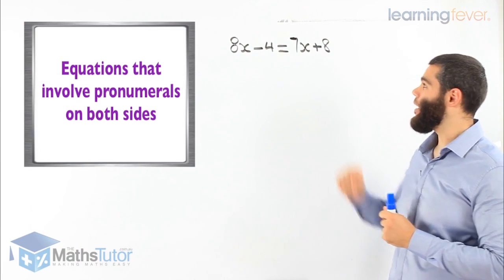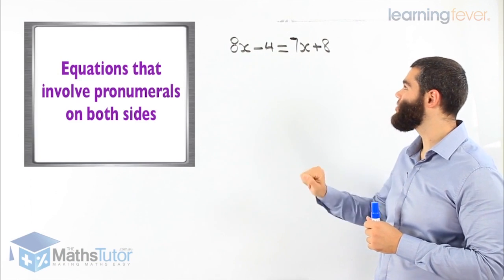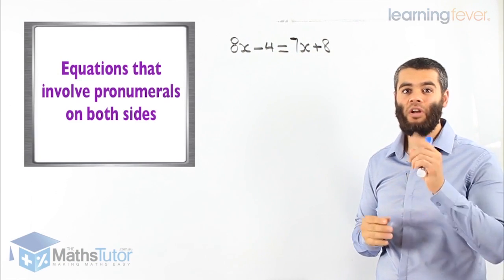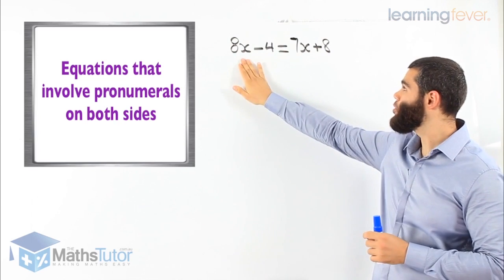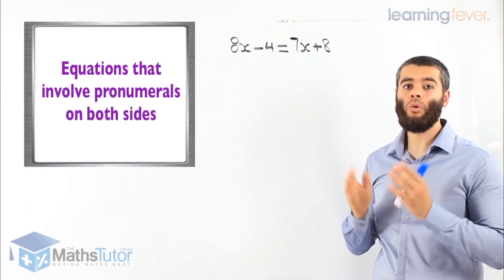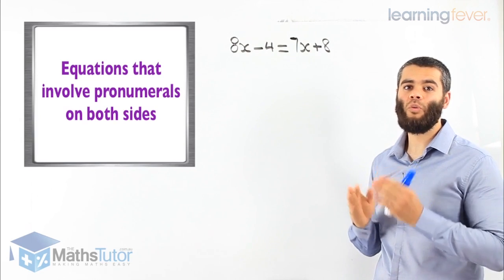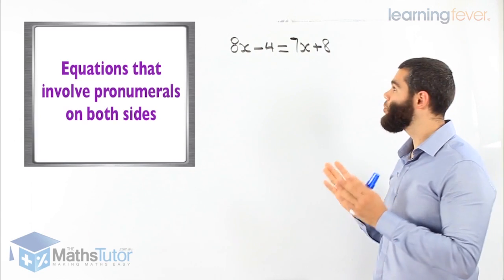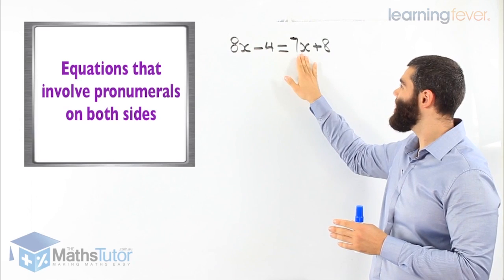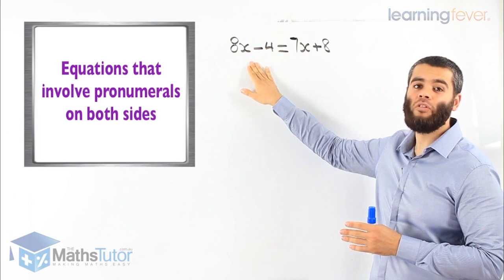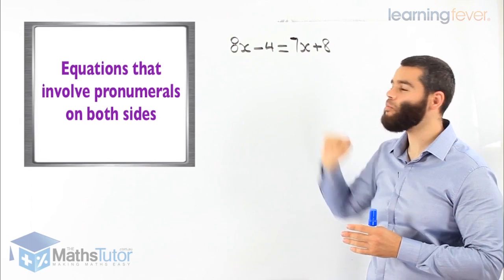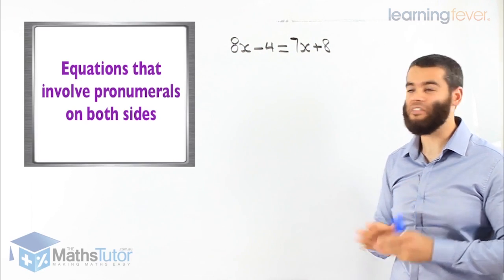We have an equation where we have 8x minus 4 equals 7x plus 8. What do you notice? We have pronumerals on the left and pronumerals on the right. We would like to move all pronumerals to one side, preferably to the left. So the 7x, we're going to move it to the other side so that way we can have the pronumerals on the left. Let's do that first.